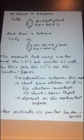So there is benzene, C6H6, with a boiling point of 80.1 degrees Celsius. And we have toluene, C7H8, with a boiling point of 111 degrees Celsius. The molecules look very similar, and the intermolecular interactions are very similar as well. In this case, the IIs are the London forces.